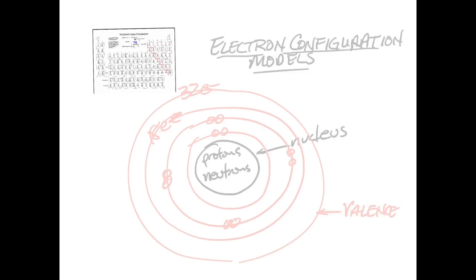Protons have a mass of 1 atomic mass unit (amu), and neutrons also have a mass of 1 amu. Regarding electrical charges: protons have a one-positive charge, neutrons have a neutral charge, and each electron has a one-minus charge. The charge on one electron cancels out the charge on one proton and vice versa.